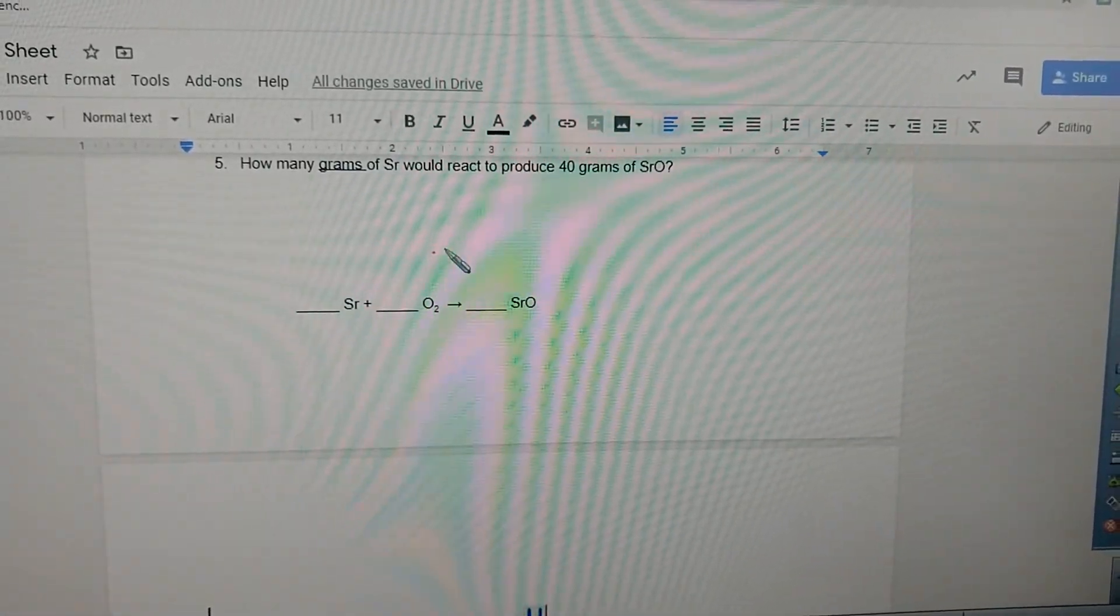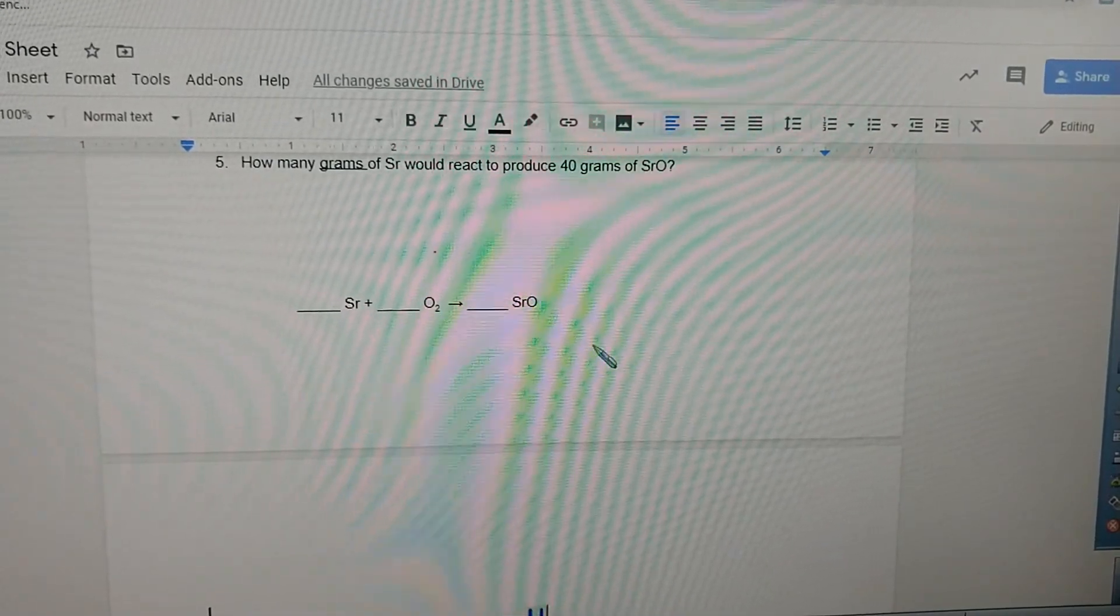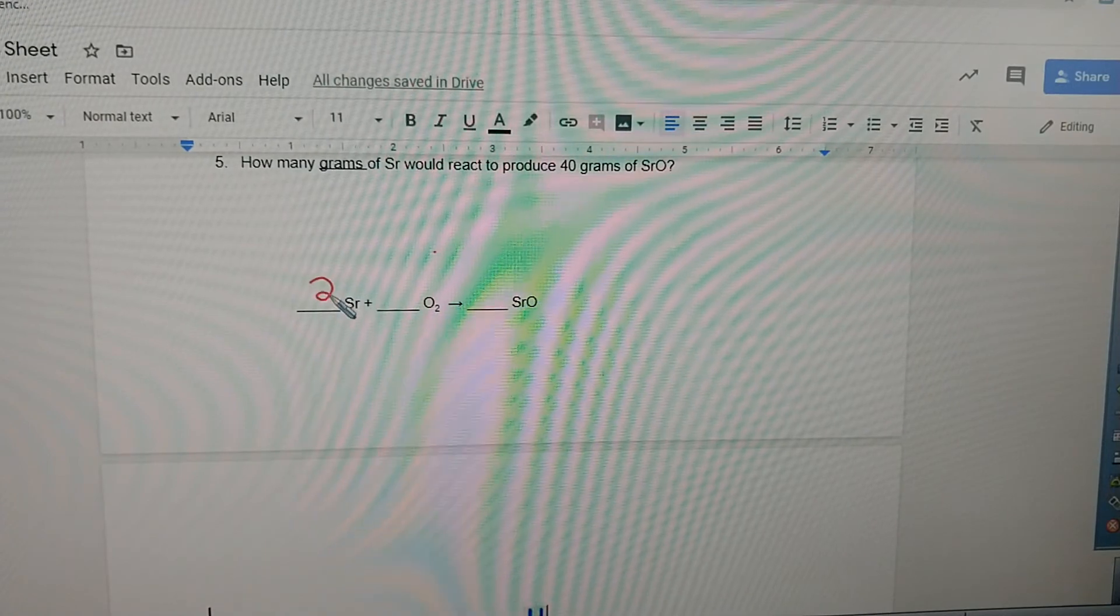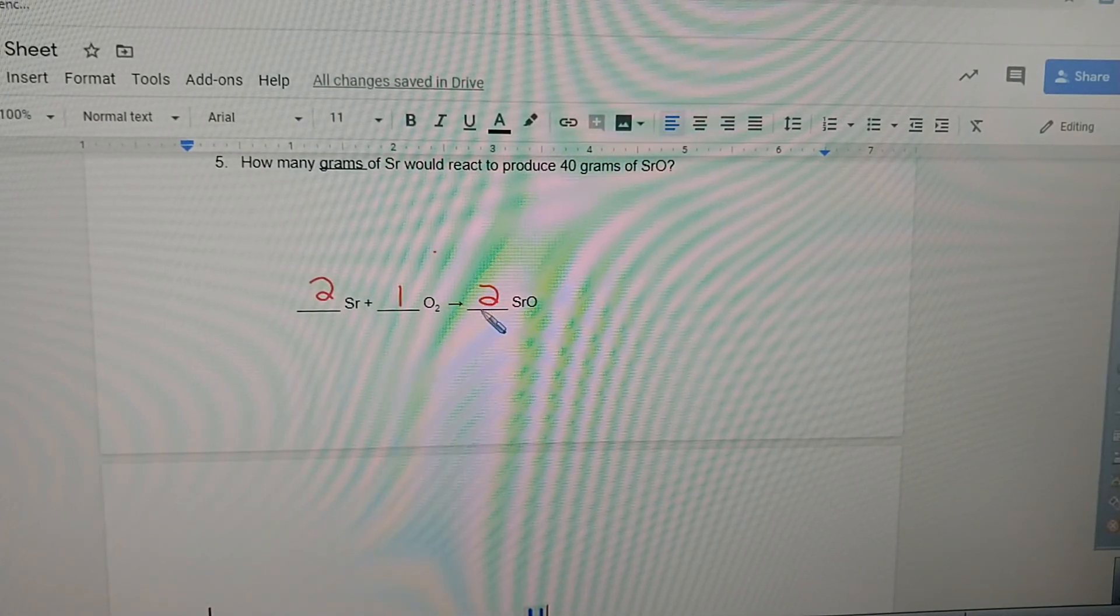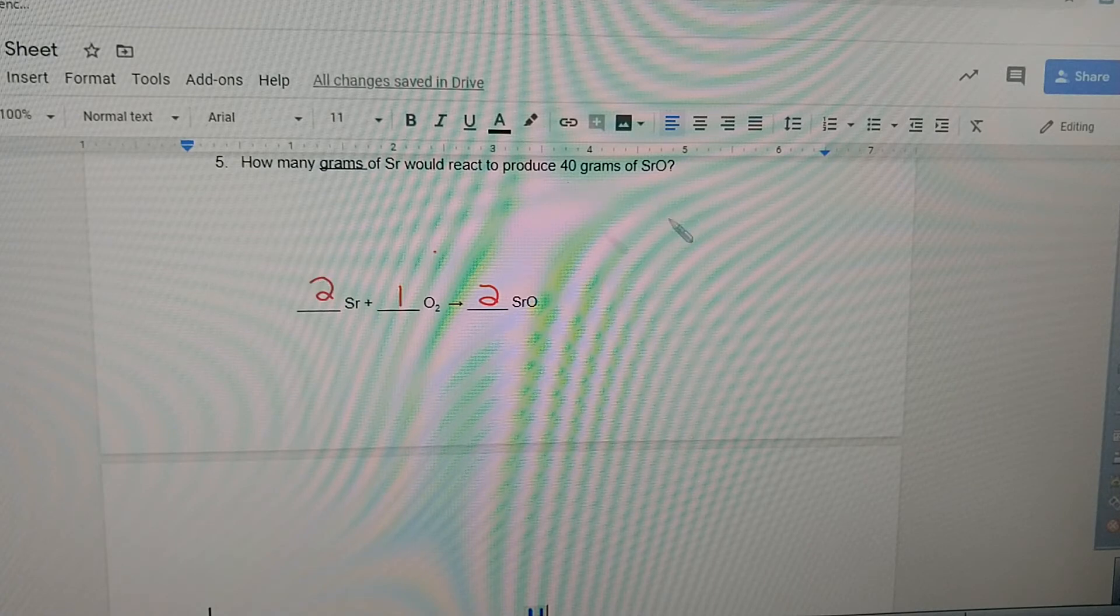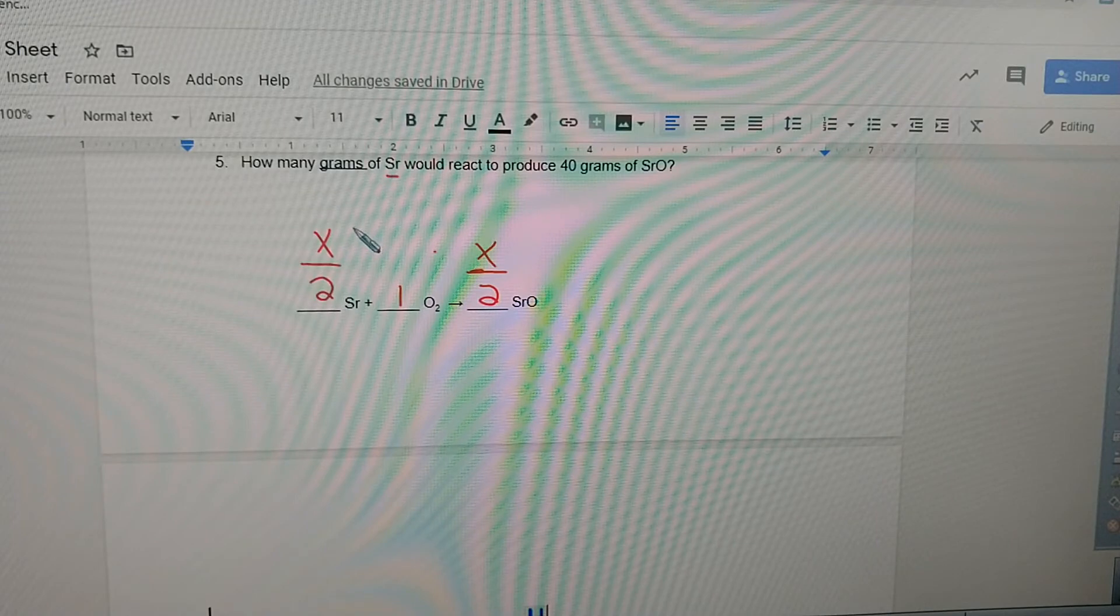How many grams of strontium would react to produce 40 grams of strontium oxide? Here we go. First, we got to balance this. This is two, one, two again, right? Two, one, two. How many grams would produce grams? First, we can only solve this if these numbers that go on top have to be in moles. So we have a number here equal to a number here over two, because we're talking about strontium and we're talking about strontium oxide.